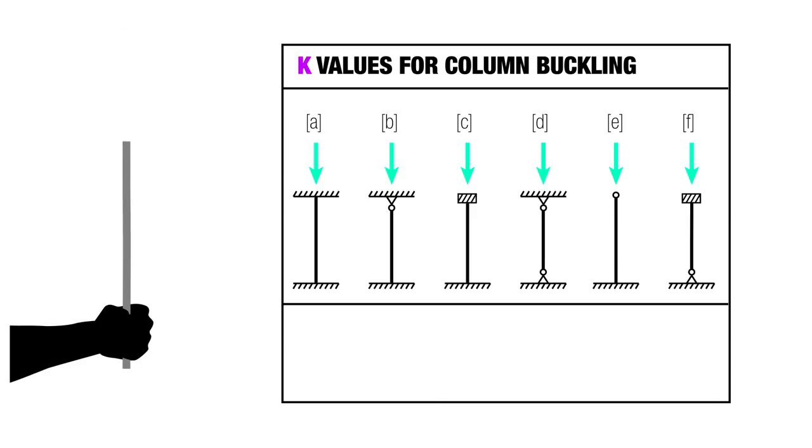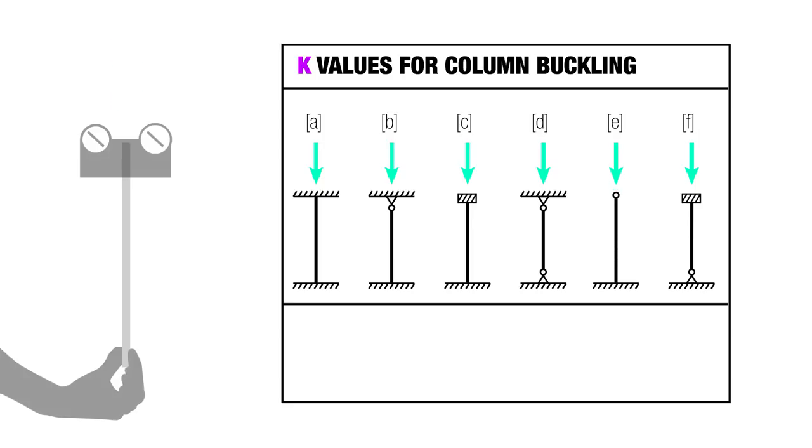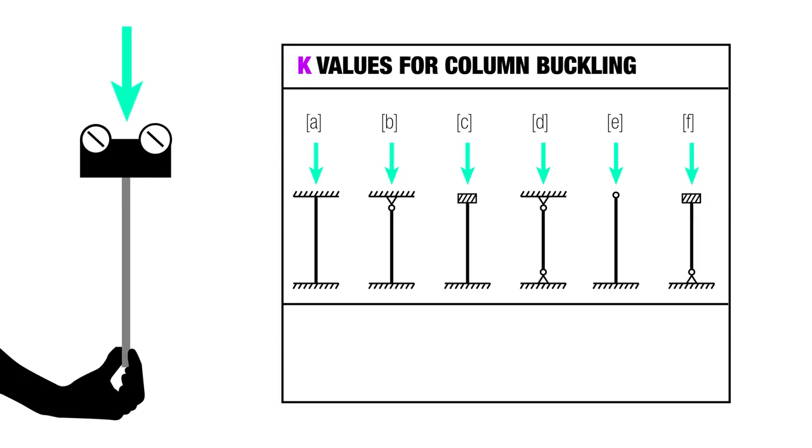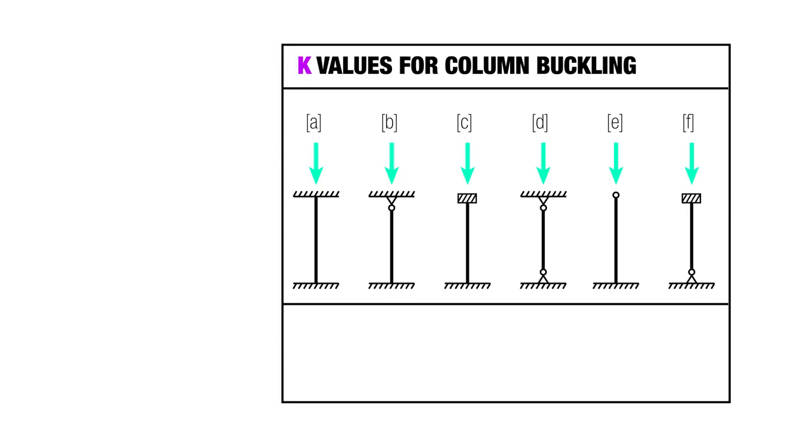On E you have something that's fixed on the bottom and allowed to kind of move around at the top. And then on F we have something that has a pin connection on the bottom and translation on the top.